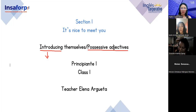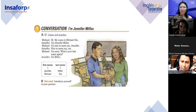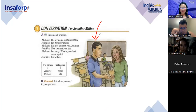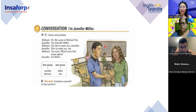So, this is class number one. Vayan tomando nota — tenemos 16 clases, cada una con un tema diferente. How do you introduce yourself in English? Here we have a conversation between a boy and a girl. What's his name? Michael. And what's her name? Jennifer. Where are they? At the school — in the classroom. They're being specific.